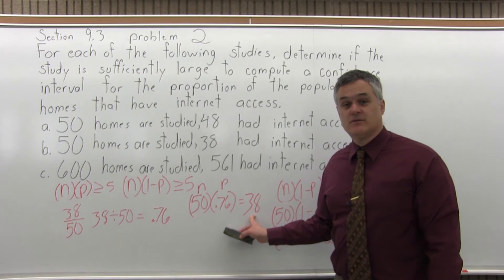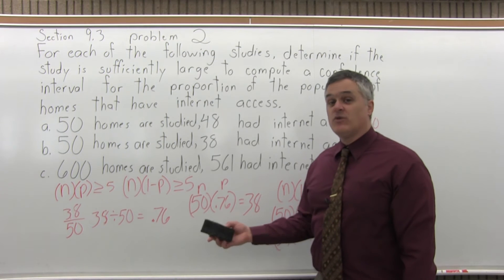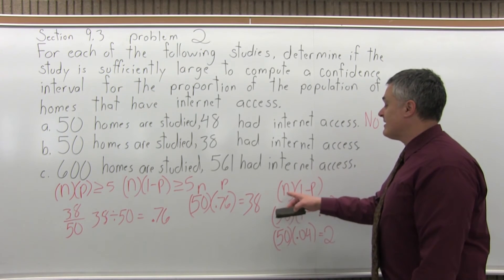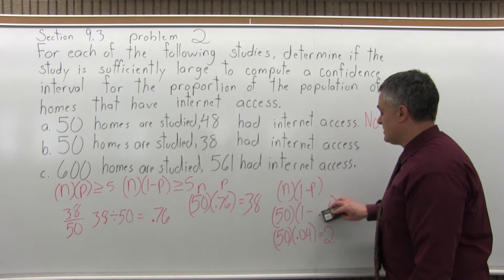That's at least 5. So, that's okay. And it was okay before. So, let's see if the n times 1 minus p is okay this time.